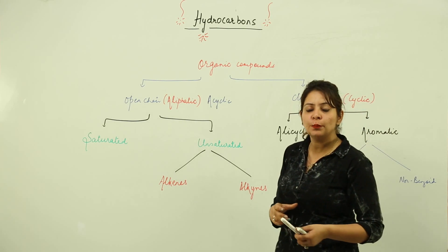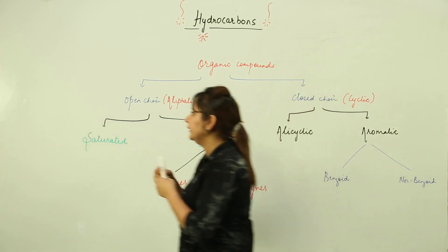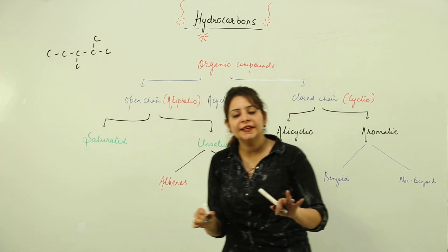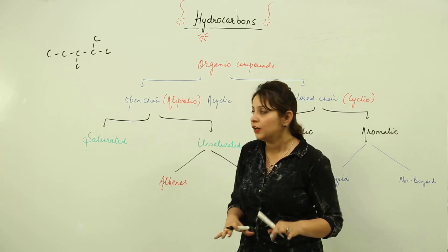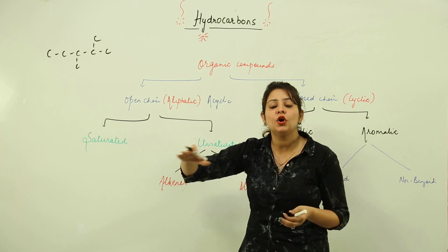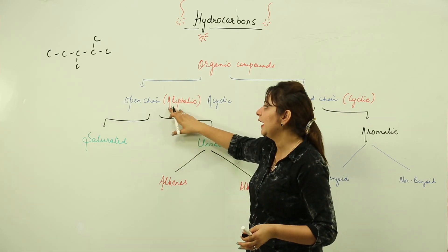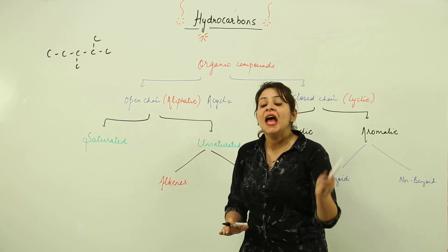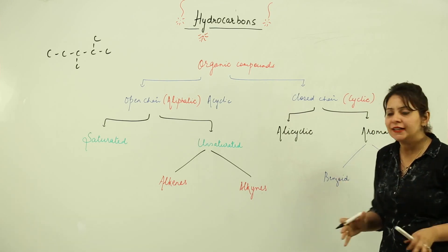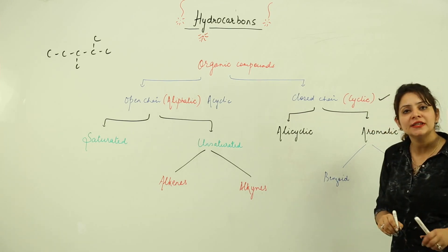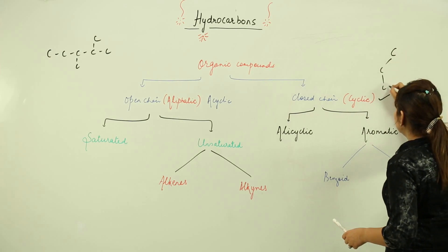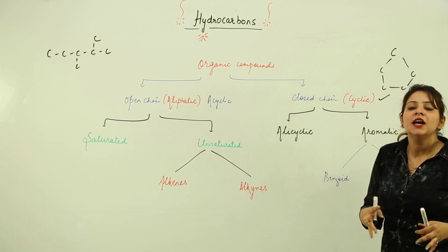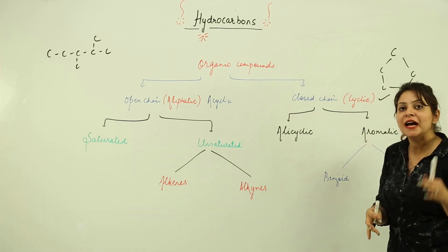As the name suggests, open chain means we are going to see only chains. These chains can be branched, but they will only be chains and won't be connected to each other. All compounds which are either straight chain or branched belong to the category of open chain aliphatic or acyclic compounds. When carbon atoms form a ring-like structure, they fall under the category of cyclic compounds.